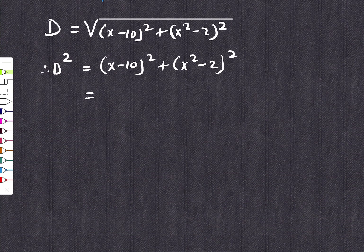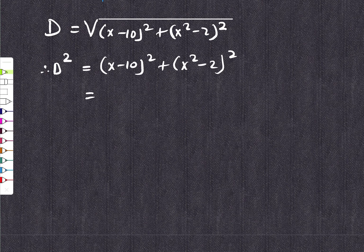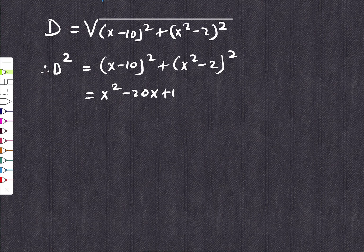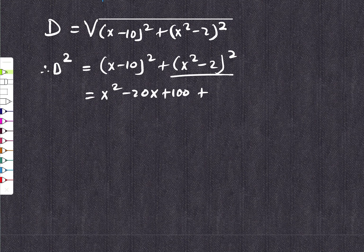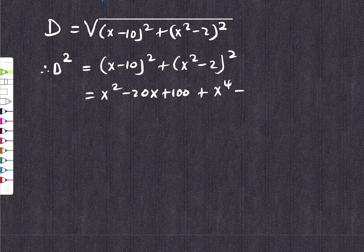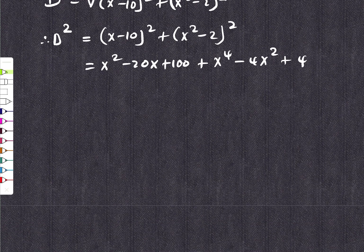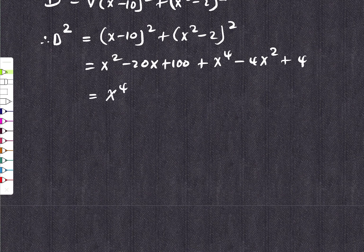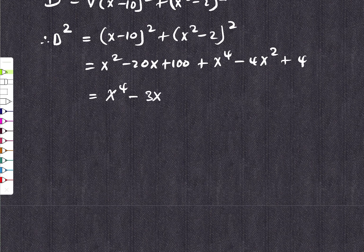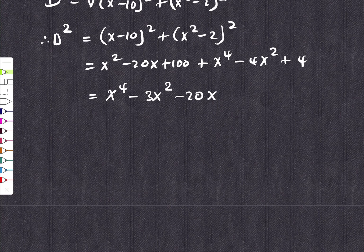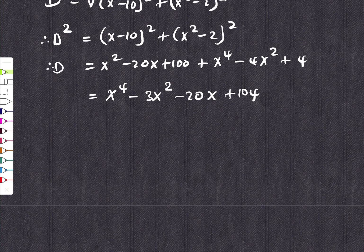Let's try to expand it. We're going to get x² - 20x plus 100. And then plus, if you're trying to expand this, this is going to be x⁴ minus 4x² plus 4. If you're trying to group the like terms here, you're going to get x⁴ - 3x² - 20x plus 104. That is really going to be your D².